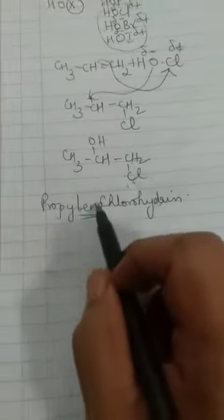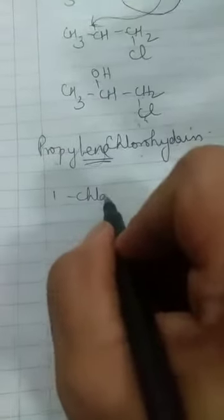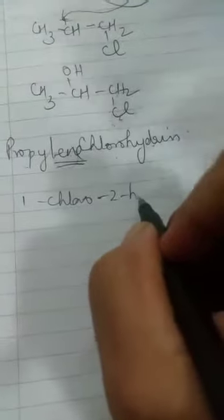Propylene. Kyou propylene? E and E kyou? Because it is a vicinal compound. Okay, baju baju ke carbon peh substitution hua. If you are using IUPAC, it will be known as 1-chloro-2-hydroxy. Ha na? 1-chloro-2-hydroxy and then propane. Main chain propane ka hai.